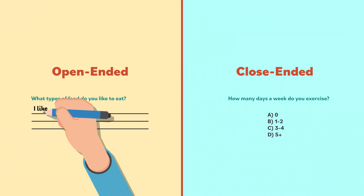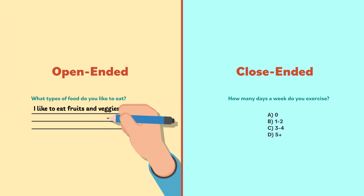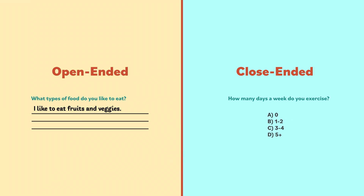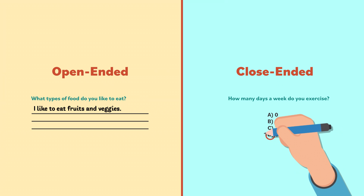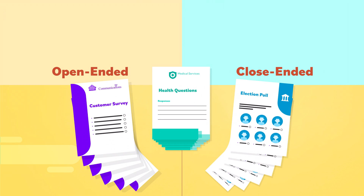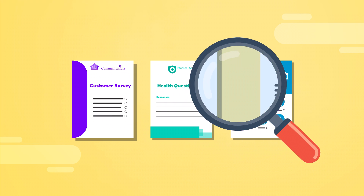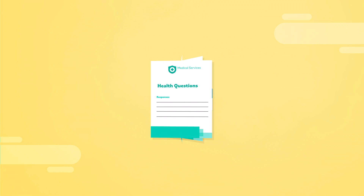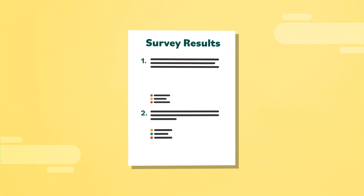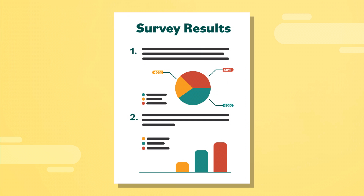Open-ended questions give people the freedom to write out their answers, while closed-ended questions require them to choose from a set of options. After all of the information is collected, it can be presented in a report. Oftentimes, the data is shown as graphs.